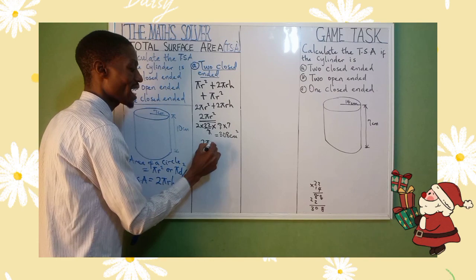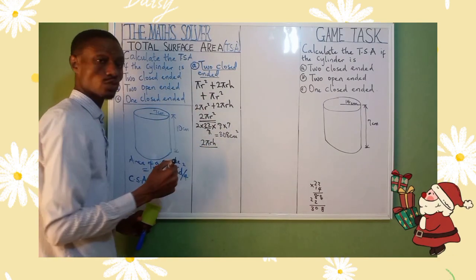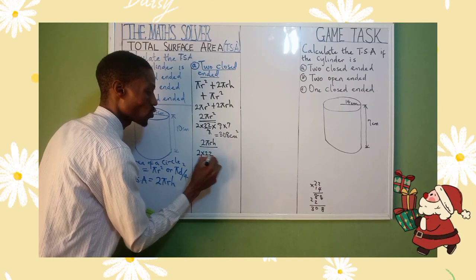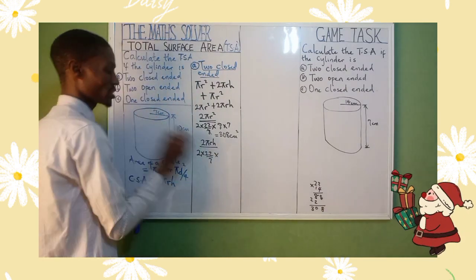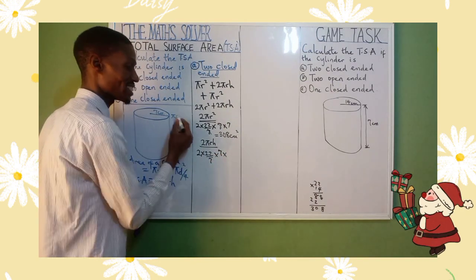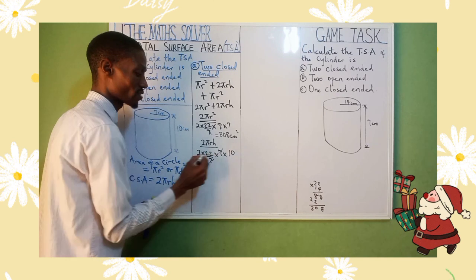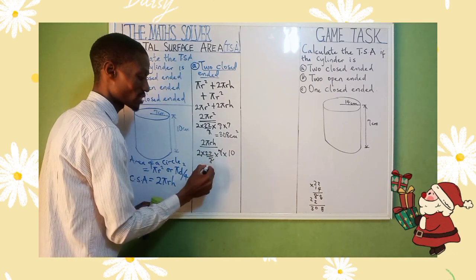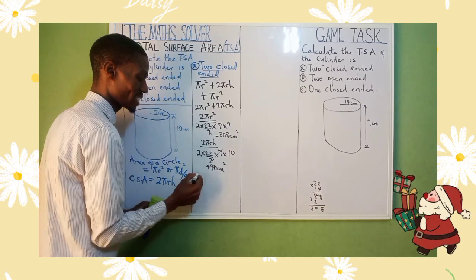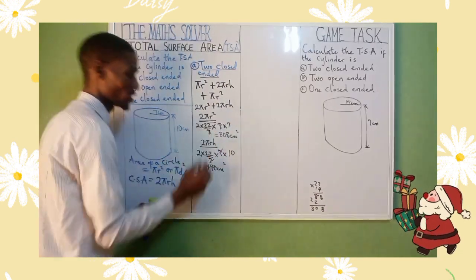Now the second part: 2πrh. That is 2 × (22/7) × 7 × 10. The 7s cancel, giving 44 × 10 = 440 cm².